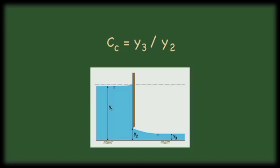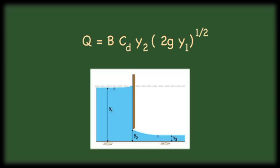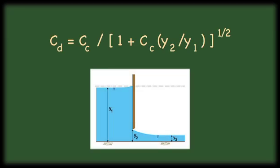This theoretical formula can be expressed in terms of the gate opening y2 by defining a contraction ratio c sub c. This leads to the discharge coefficient c sub d.